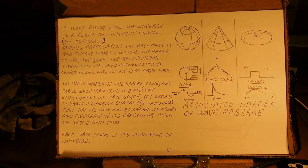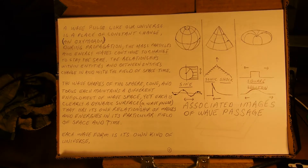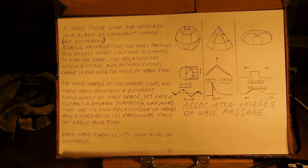A wave pulse like our universe is a place of constant change — an oxymoron. During propagation, the mass particles and energy waves continue to change to stay the same. The relationships within entities and between entities change in and with the field of space-time. The wave shapes of the sphere, cone, and torus each maintain a different enfoldment of wave space, yet each is clearly a dynamic surface — a wave pulse that has its own relationship of masses and energies in its particular field of space and time.